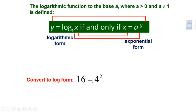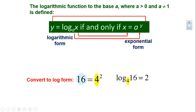Here's an example: 16 = 4 squared. To convert it to logarithmic form, we identify the base — in this case, 4. The output is 16 and the input is 2. So the corresponding logarithmic form is log base 4 of 16 = 2. The output becomes the input and the input becomes the output. Log base 4 of 16 is 2 because we're asking: to what exponent do I raise 4 to get 16? That number is 2.